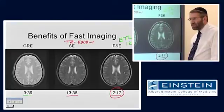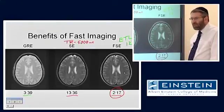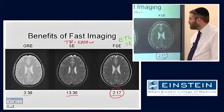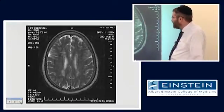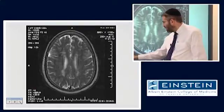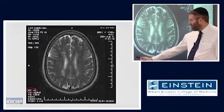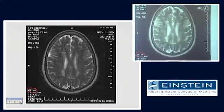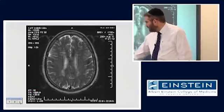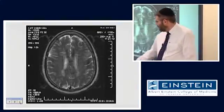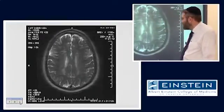FLAIR images use TRs over 10 seconds — FLAIR was virtually not possible when all we had was spin-echo imaging. This is a series of T2-weighted fast spin-echo images acquired with different echo trains: 16, 32, 64, and 128 echoes following each TR.